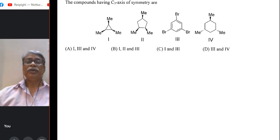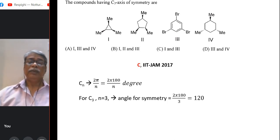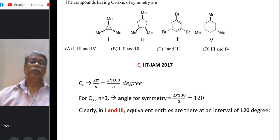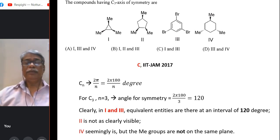The compounds having C₃ axis of symmetry are. Four diagrams are there. Now if you know that C_n axis corresponds to an angle of rotation, symmetric angle of rotation 2π/n. Now n is C here, C₃. So 2π/3, that means 120 degree. So clearly in figure I and III you see that equivalent entities, that means either methyl in the first one and bromine in the third one. They are at an interval of 120 degree. So that gives you an equivalent configuration of rotation by 120 degree. So I and III are right options. II is visibly not clearly because neither of the angles between Me and Me is 120. Well option IV seems to be the right one, but because the angle looks like 120, but the 2 methyl radicals are not in the same plane as the sample. So it does not give you the equivalent function after a rotation. So it is not the right.